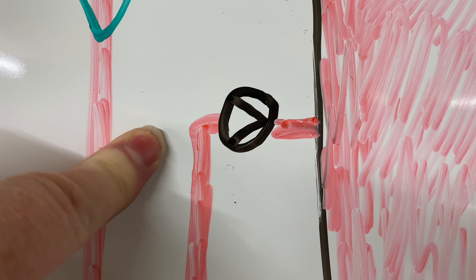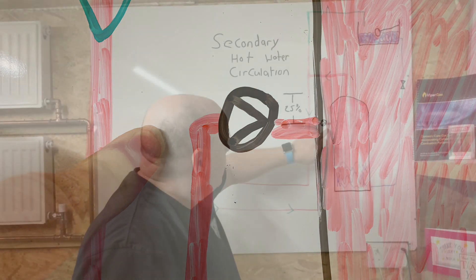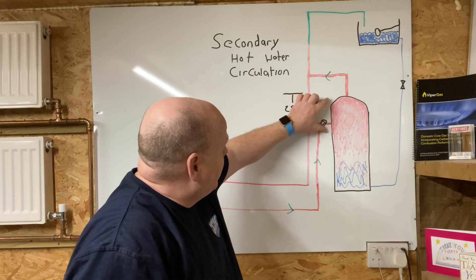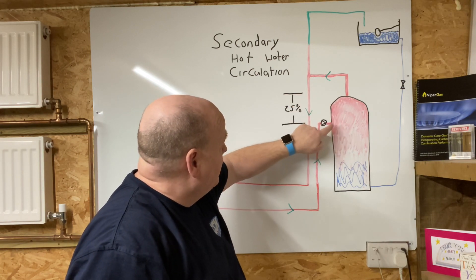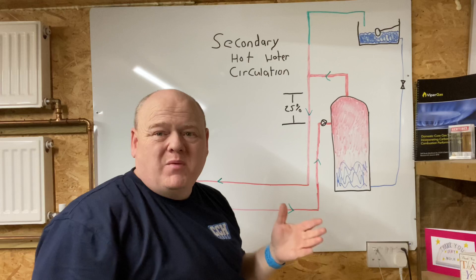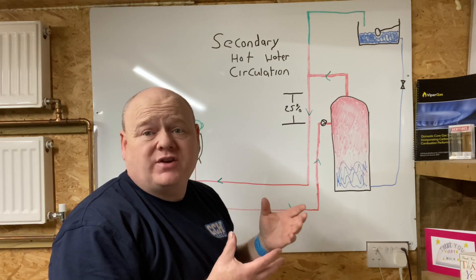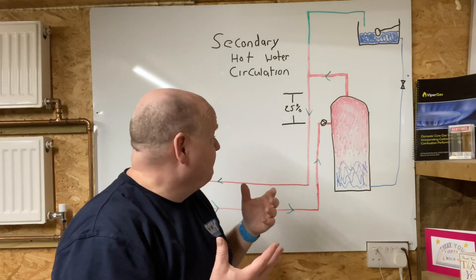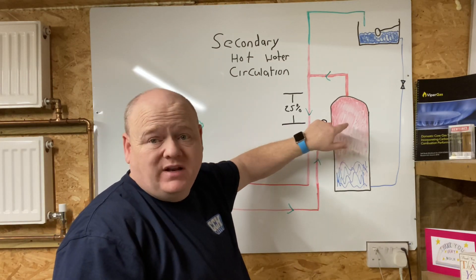The pump or circulator is normally operated by a time clock which only permits water to circulate around the system when the building is occupied, to conserve energy. The secondary return pipe normally includes the installation of a non-return check valve near the pump — not shown here but you normally have one. This connection normally tees back into the cylinder on the return at about 25% down on the cylinder. When you buy an unvented cylinder you'll normally already have the connection point for this.